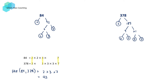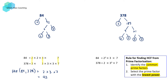Another method is to directly use its prime factorization written in index form. 84 is equal to 2 squared times 3 times 7. 378 is equal to 2 times 3 cubed times 7. Now the rule is we identify the common prime factors. In this case, the common prime factors are 2, 3, and 7.